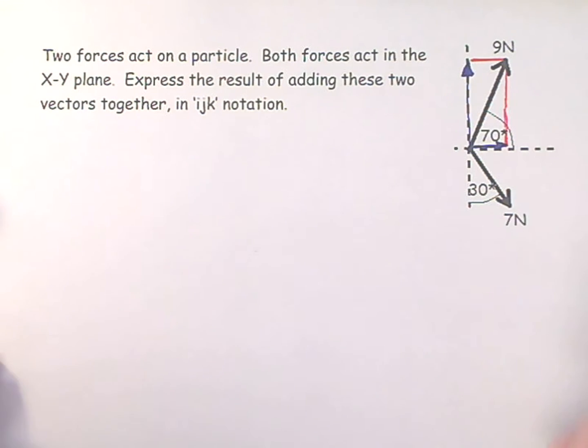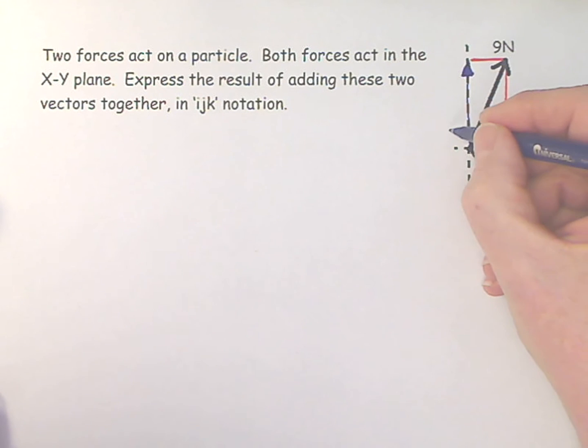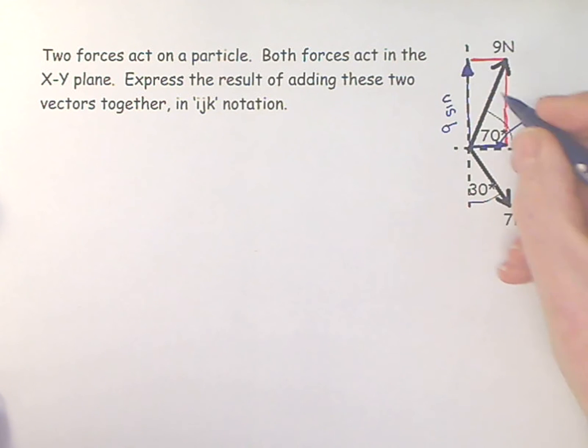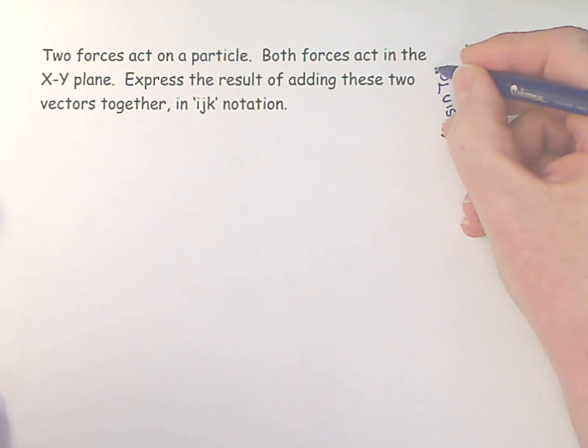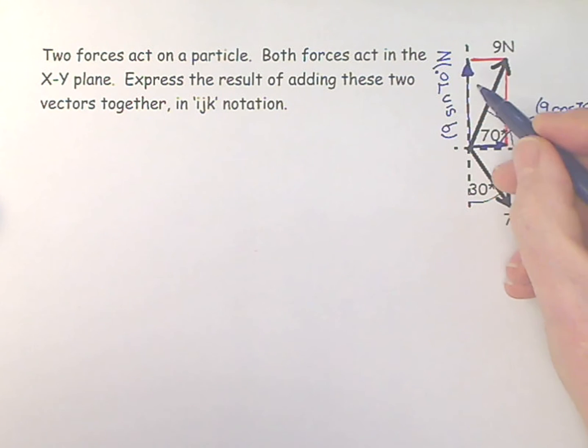I can write down the value of these components using trigonometry, and I can say that this guy here is going to be 9 cosine 70 degrees newtons. And this one here would be 9 sine 70 degrees. Why is this sine? This length is the same as that length, and this is the opposite of this angle, and the original vector is the hypotenuse. So opposite over hypotenuse is sine. And this is cosine because this is the adjacent to this 70 degree angle, and adjacent over hypotenuse is cosine.